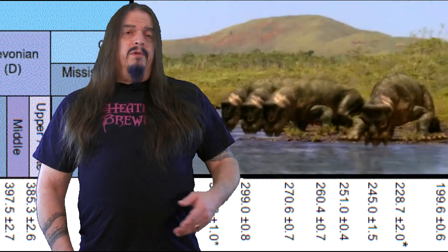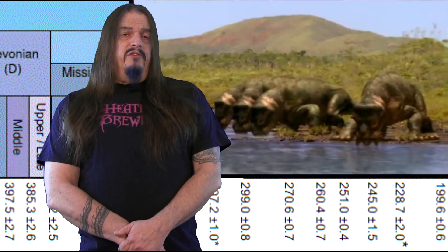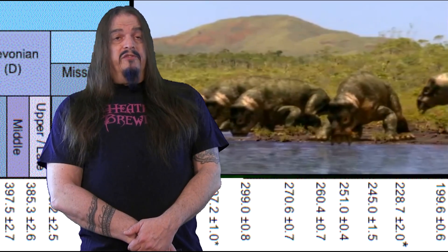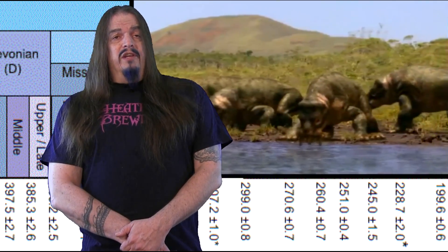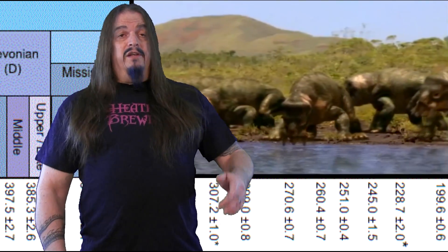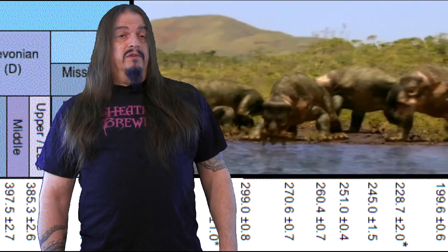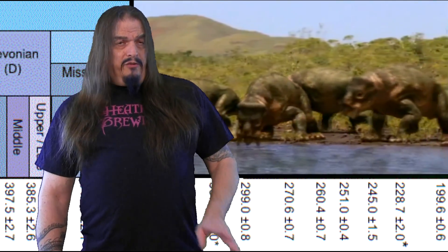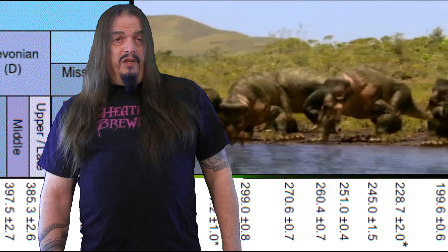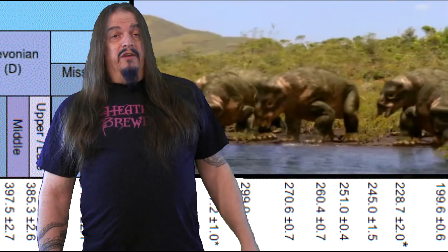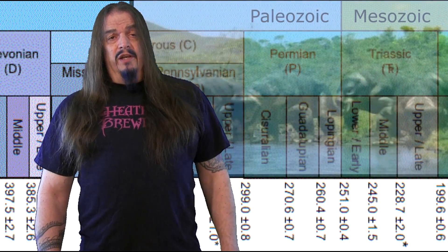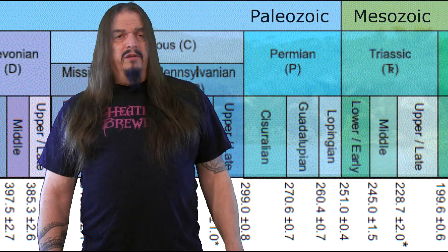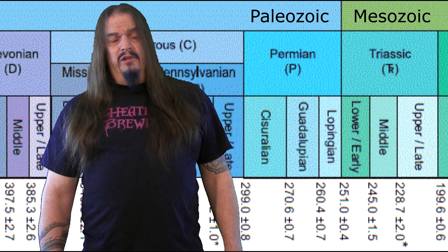A couple of dicynodont species survived the Permian extinction and were by this time still occupying the niche of grazing cattle on every continent around the world, in fact. So that hadn't changed yet, but it would by the end of the Triassic — roughly 51 million years later — probably due to increased competition.